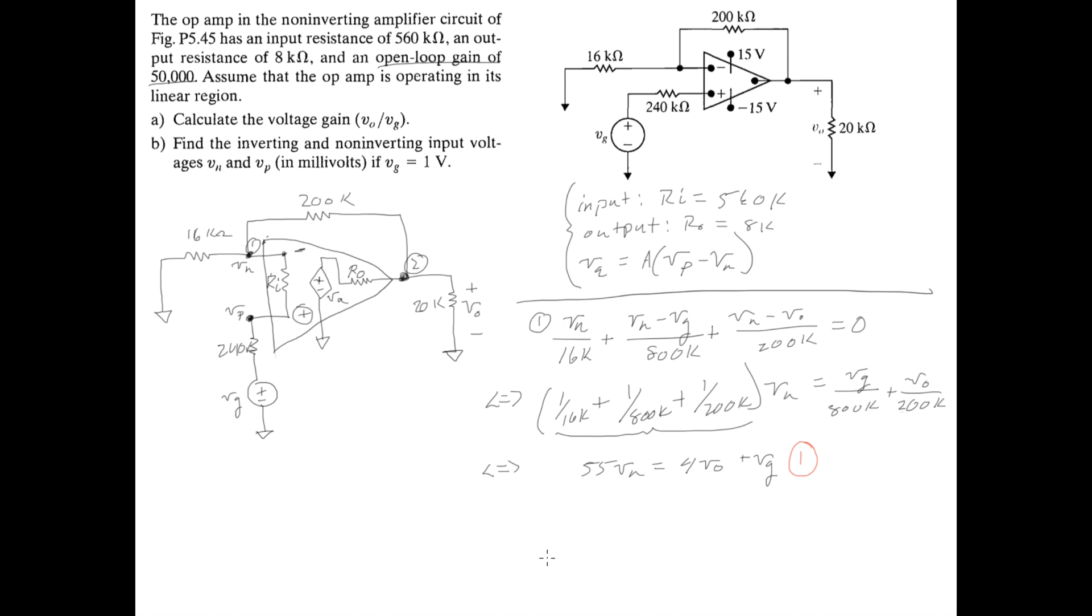So now I have one equation which consists of Vn, V0, and Vg. But to find the actual gain, V0 over Vg, I'm going to need another equation. And luckily, we have another node right here. So now I'm just going to start doing nodal analysis on node 2.